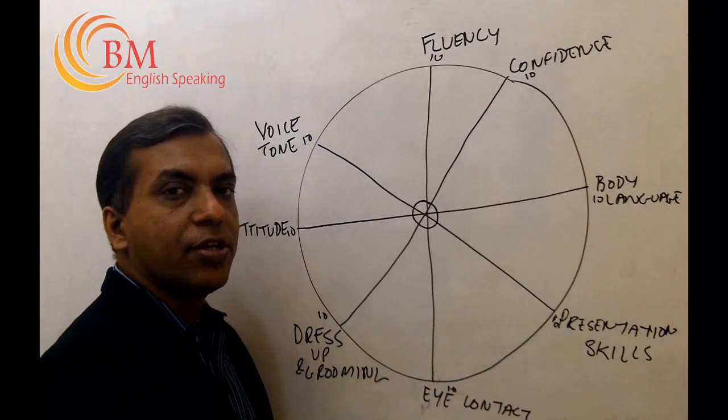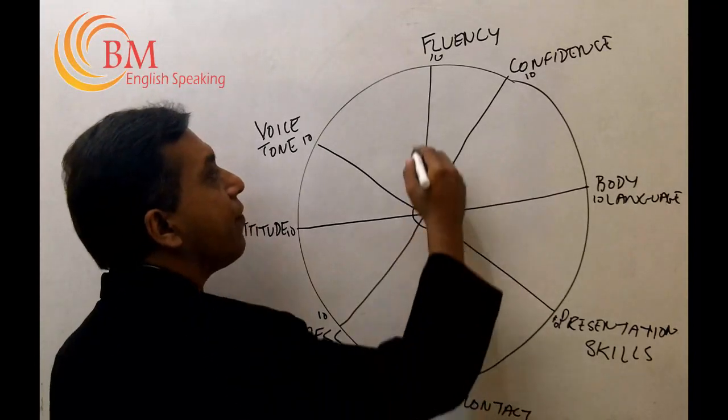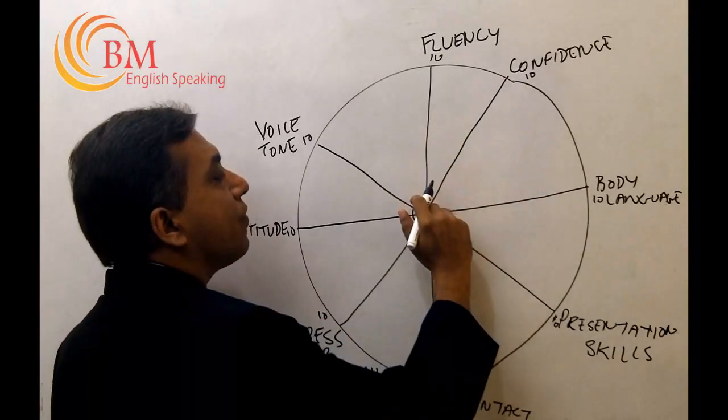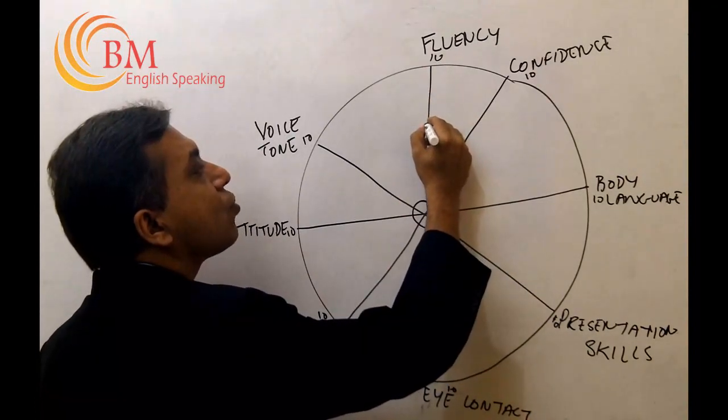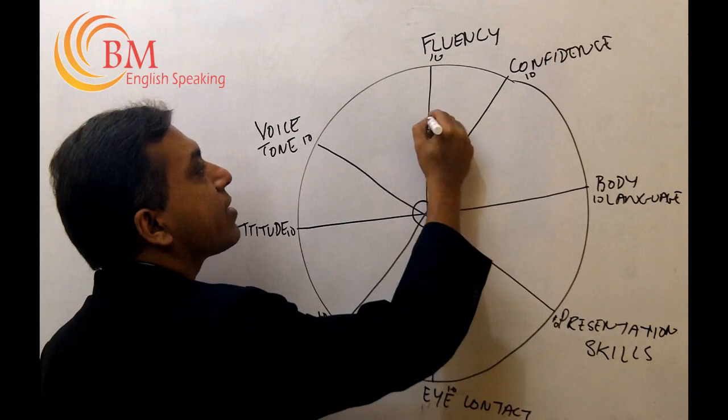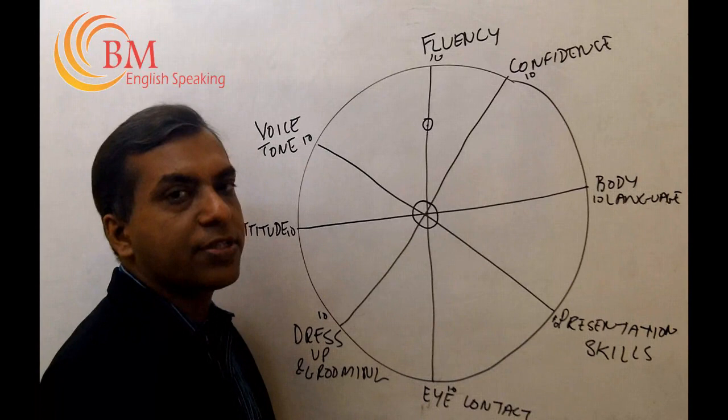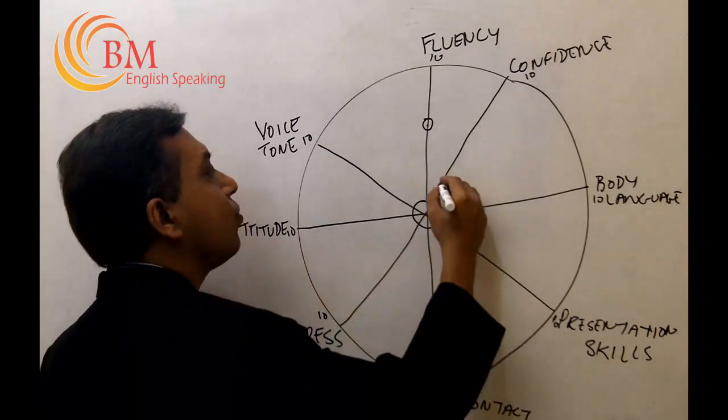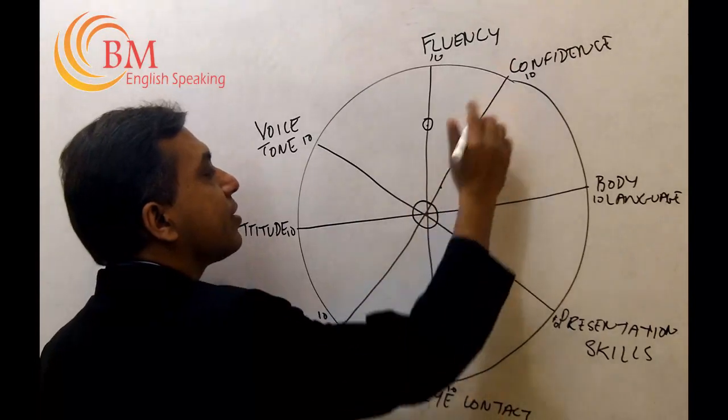Let's say you rate your language fluency on the scale of zero to ten at five. So if this is zero and this is ten, let's say this would be five. So draw a dot and a circle at five. Let's say you rate your confidence at two. So two would roughly come here.